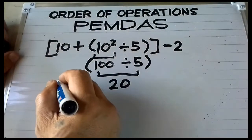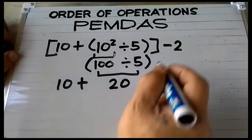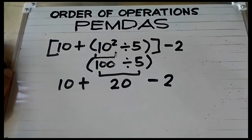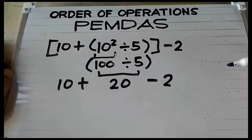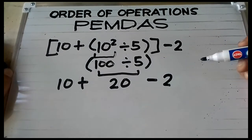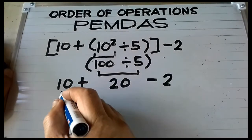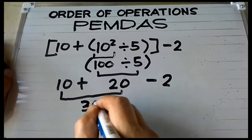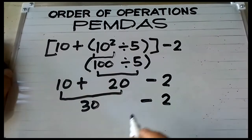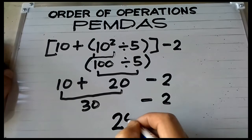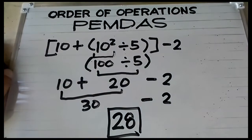Rewrite 10, addition, and bring down subtraction and 2. Now do the order of operations from left to right: 10 plus 20 is equal to 30. Rewrite subtraction and 2. Then 30 minus 2 is equal to 28, and this is the final answer.